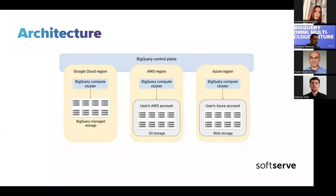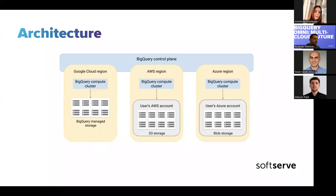For security, BigQuery only uses standard AWS IAM roles or Azure Active Directory principals to access data in your subscription. You delegate read or write access to BigQuery Omni and can revoke it at any time. Write access is only required if you want to write query results back to S3 or Azure Blob storage; otherwise, read permissions are sufficient.